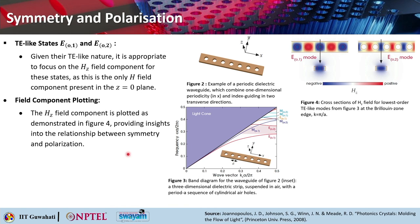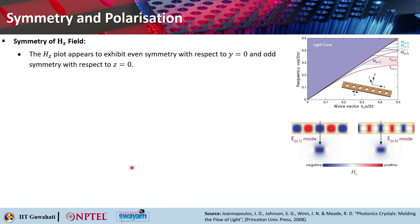The dielectric material is marked with translucent yellow shading. What is important here is to understand the relationship between symmetry and polarization. In the Hz plot, red indicates positive magnetic field and blue is negative. The Hz plot appears to exhibit even symmetry with respect to y equals 0 and odd symmetry with respect to z equals 0.